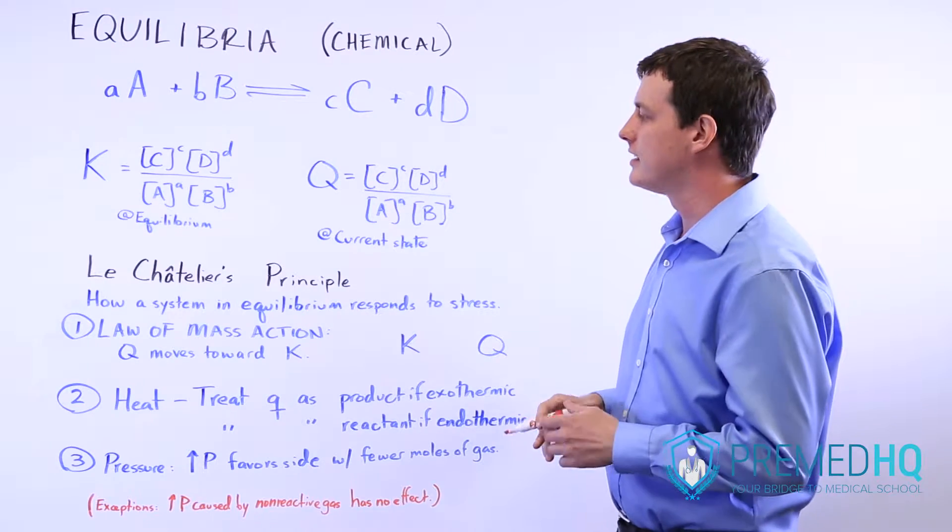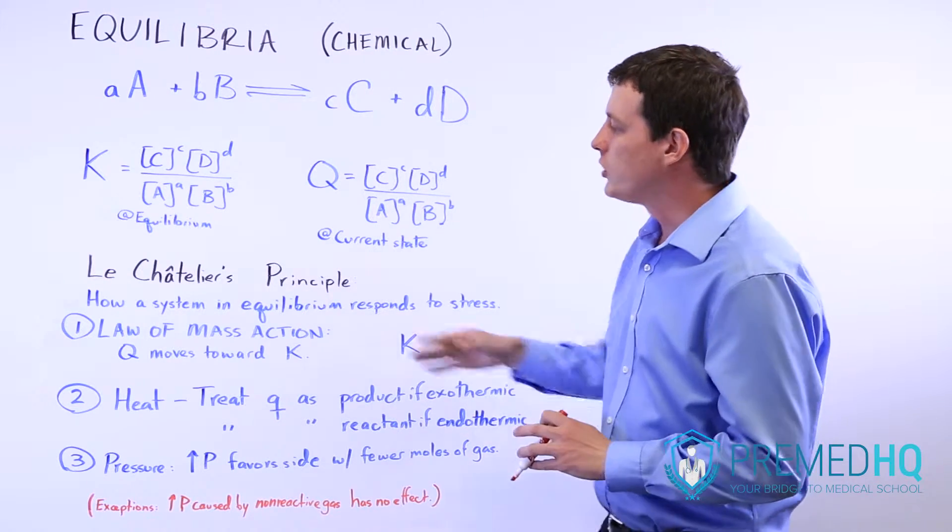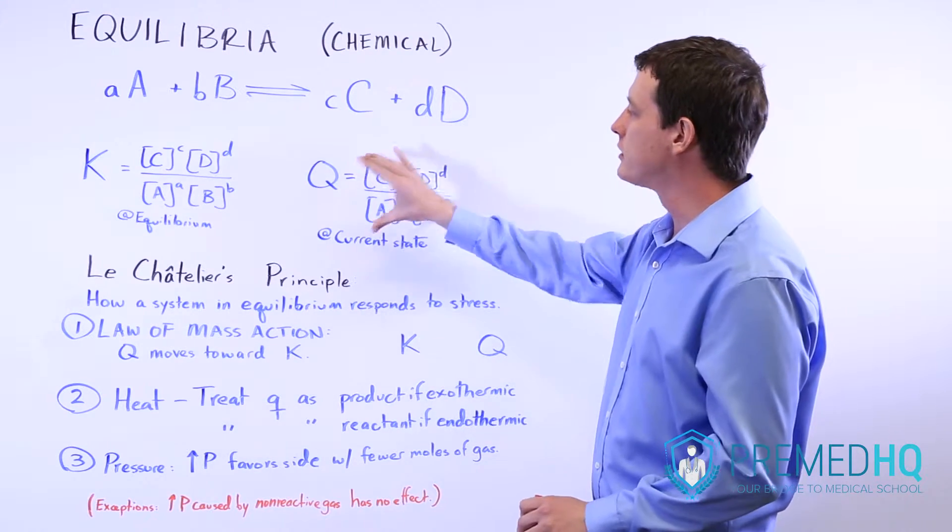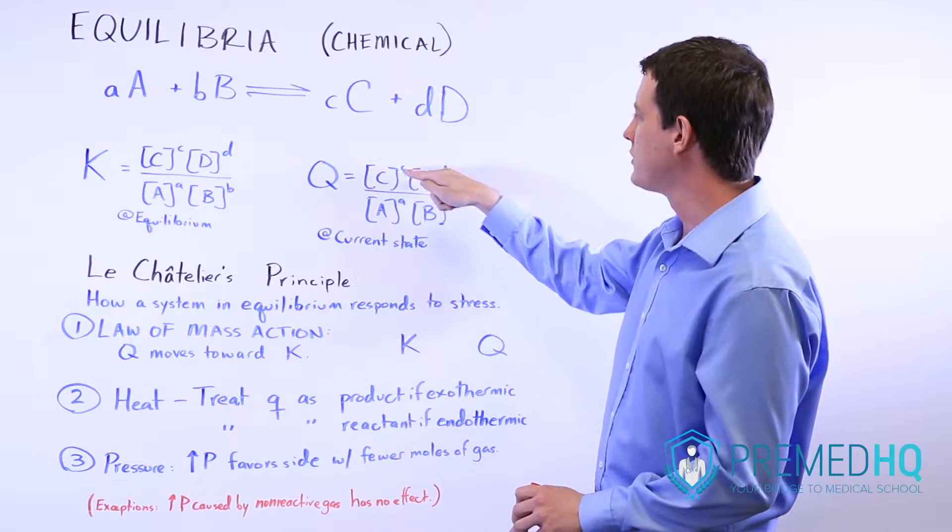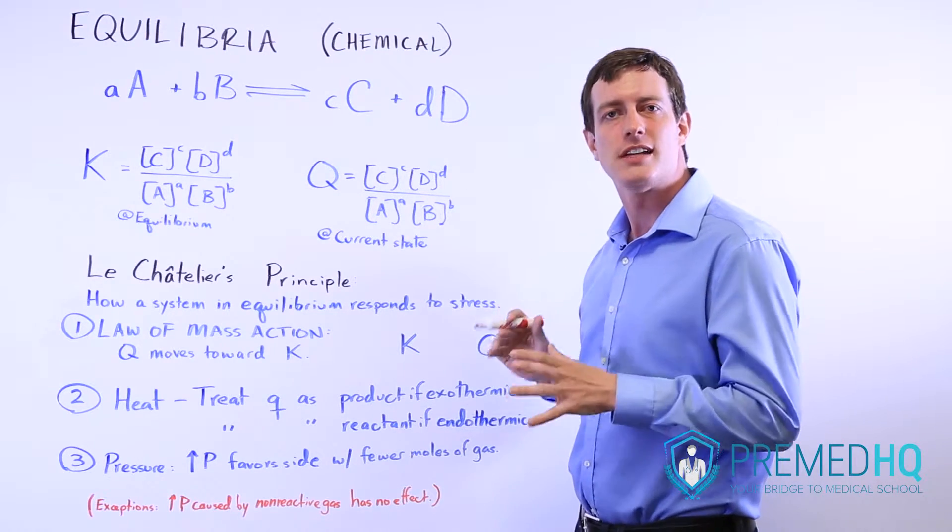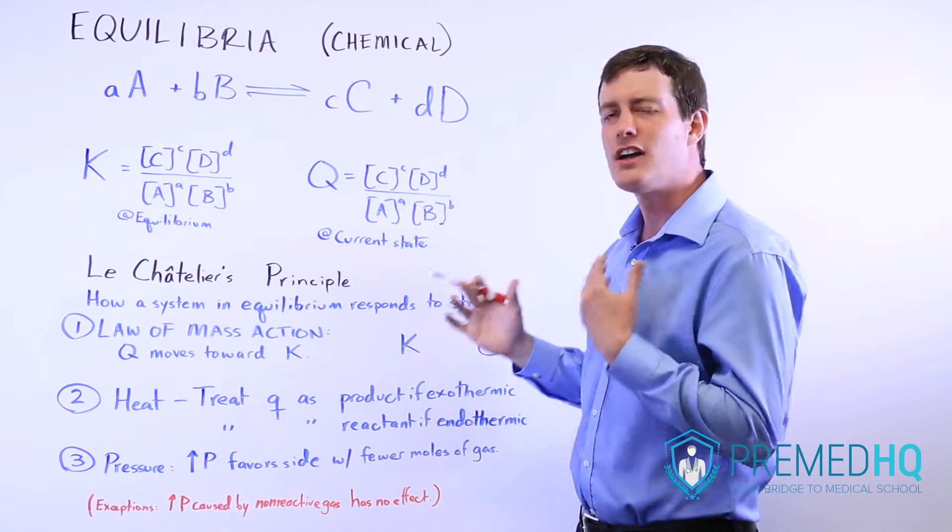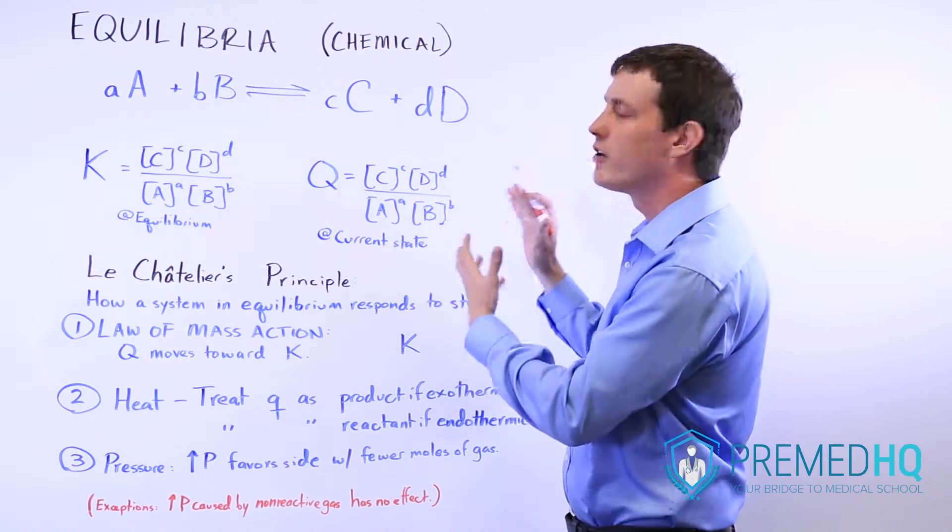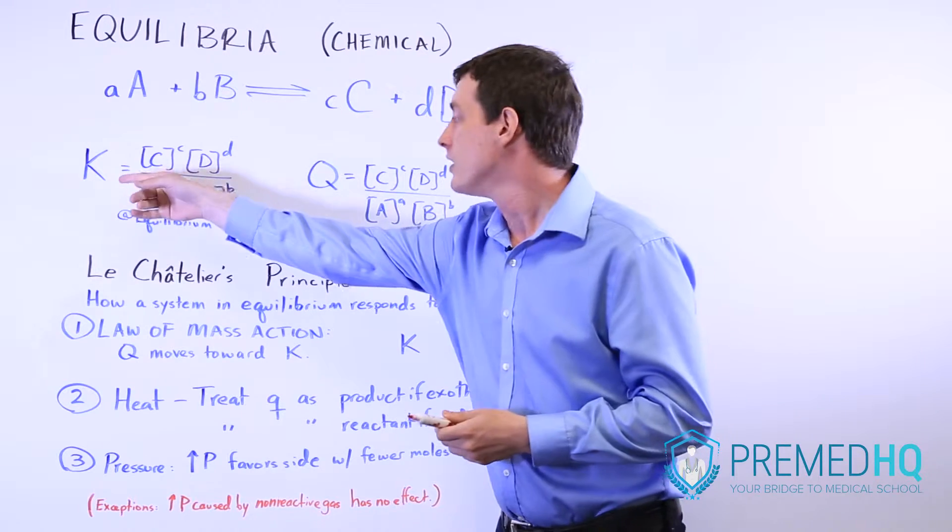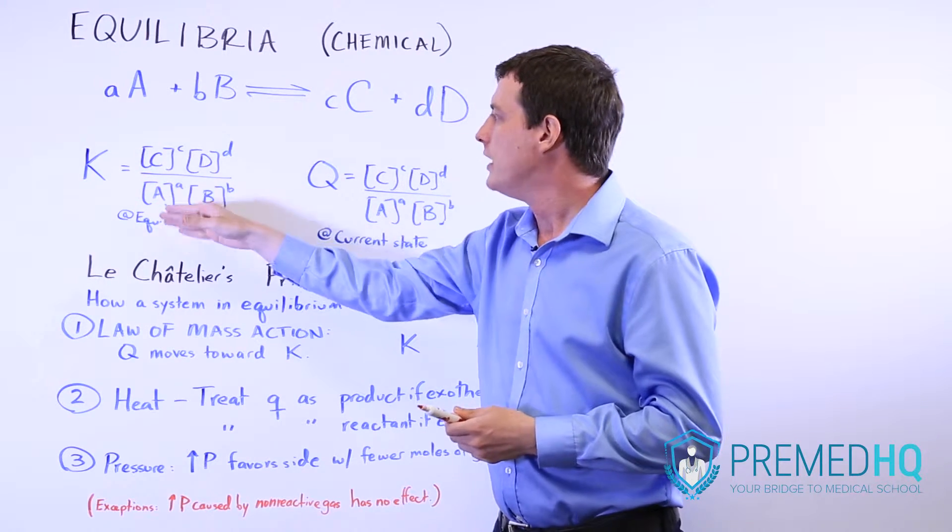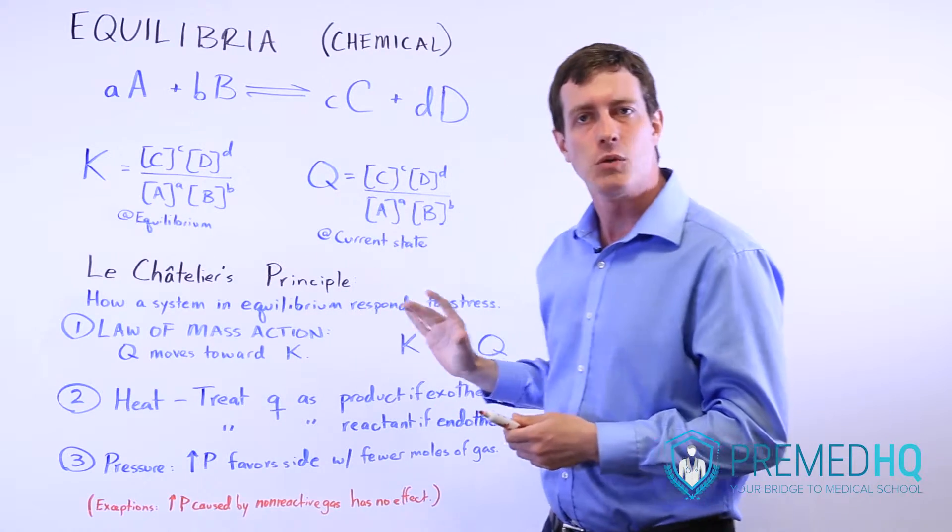What that says is that in any system, Q will move toward K. And remember that Q describes the concentrations raised to their coefficients. These concentrations are in the current state of the reaction. So it's not yet in equilibrium, but Q can give you a sense of where it is relative to equilibrium. Whereas K here is the equilibrium constant that everything moves toward, but these values are the values at equilibrium.